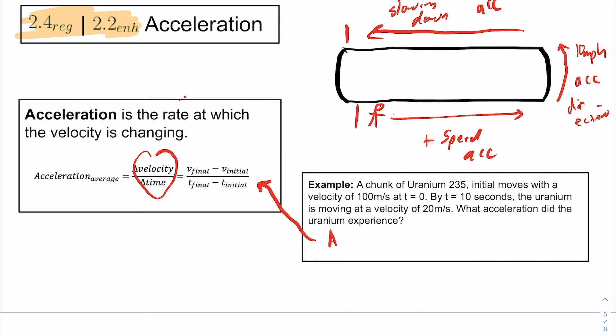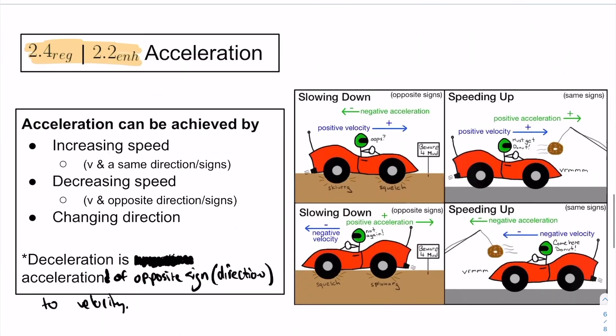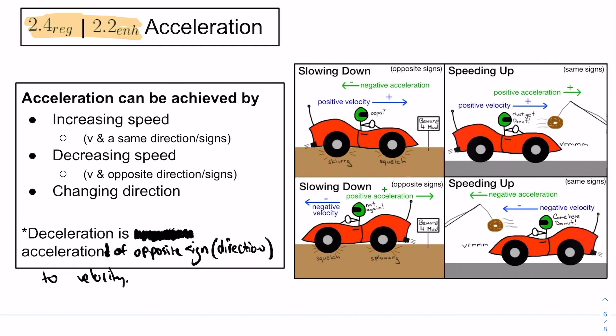All right. Here we go. Change in velocity over change in time. We write that as final velocity, that's 20 meters per second, minus our initial velocity, 100 meters per second, divided by our time, which would be 10 seconds minus 0 seconds, and we get negative 8 meters over seconds squared. Why is it negative? That's because the acceleration is in the opposite direction as our velocity. Our gas is slowing down.